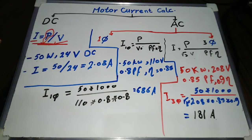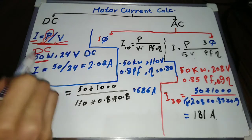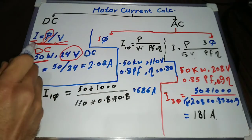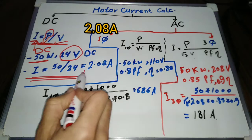Let's have an example. Suppose we have a 50 watt DC motor. Its operating voltage is 24 DC volts. Applying the DC motor current formula, we can calculate the current: I equals 50 divided by 24 equals 2.08 amps.